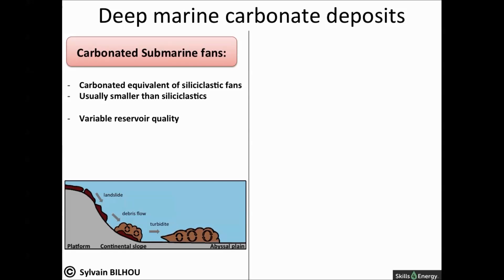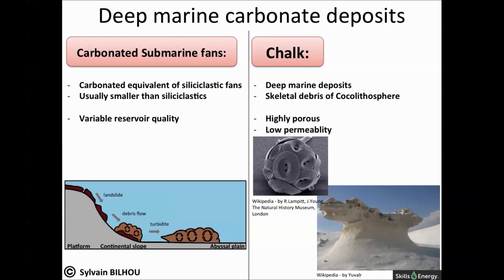The first is carbonate submarine fans, which are the carbonate equivalent of classic submarine fan systems. They are formed of detritus shed from platform carbonates into deepwater. The second is chalk, which comprises skeletal debris of the nannoplankton coccolithospheres. Chalk can be highly porous, but commonly permeability is low due to the small pore throat size.